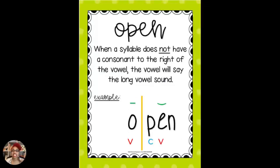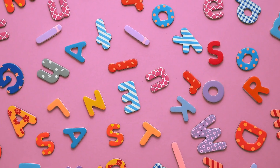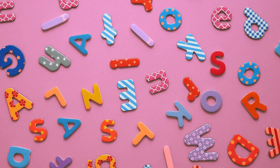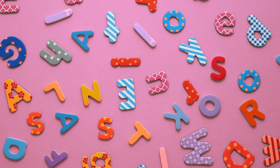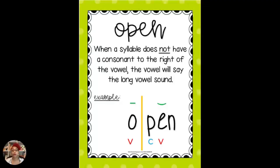Open syllables are simply when a syllable does not have a consonant to the right of the vowel. The vowel will be open, thus making it say the long vowel sound — or say its name. We always say 'making the vowel say its name,' and that's technically what it is doing. So in the word 'open,' the O has an open syllable because O says its name.